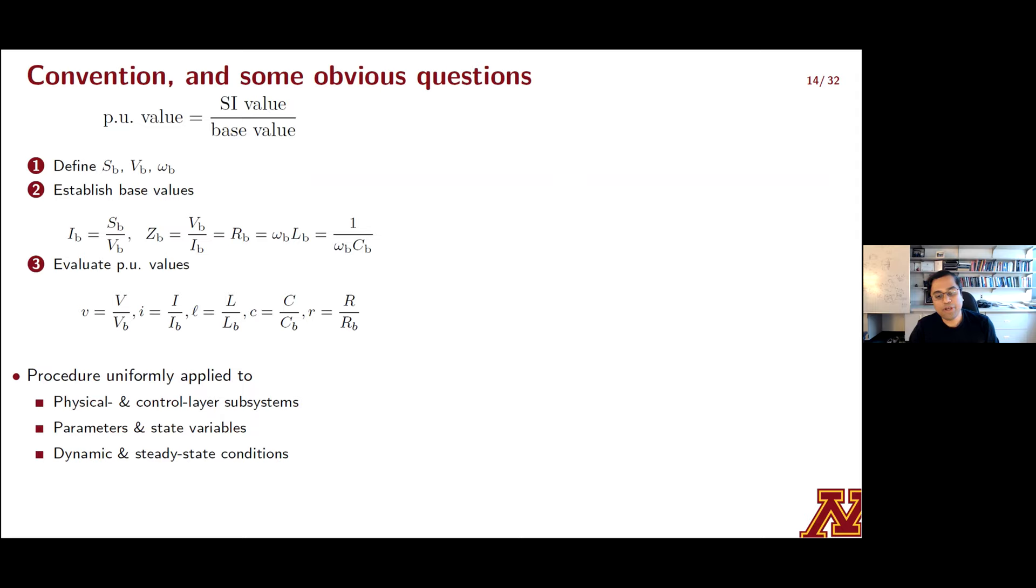So the convention in per-unit modeling is to use this very familiar formula that's at the very top of this slide. And we use this to evaluate per-unit quantities. We define a set of base values for certain primary value quantities, such as power, voltage, and frequency. And then we define base values for some auxiliary quantities that we need in order to evaluate per-unit numbers. And then we finally take our parameters and then we normalize them to get per-unit quantities. So this algorithmic stepwise procedure, one, two, and three, it's done with varying levels of effort, but it's done uniformly for physical and control layers, for parameters and state variables, and for both dynamic and steady-state models.